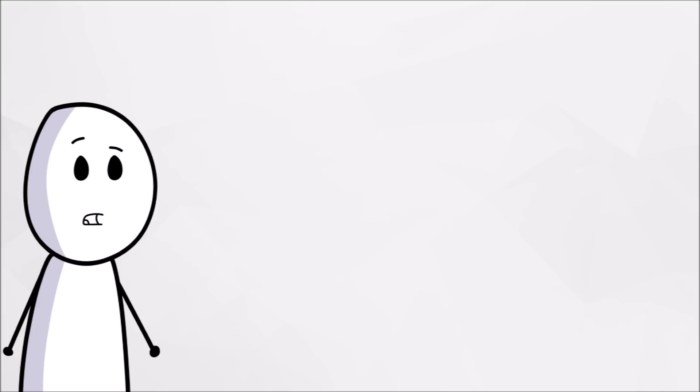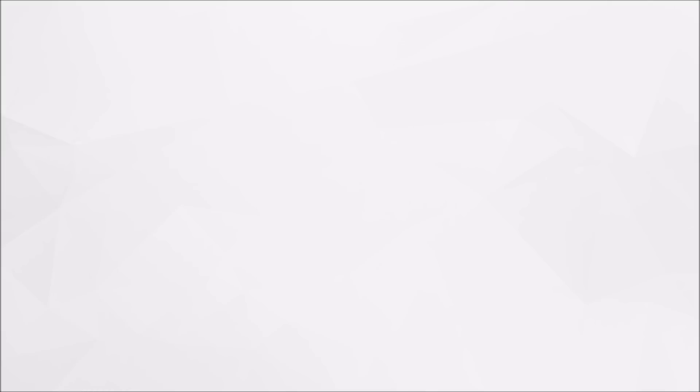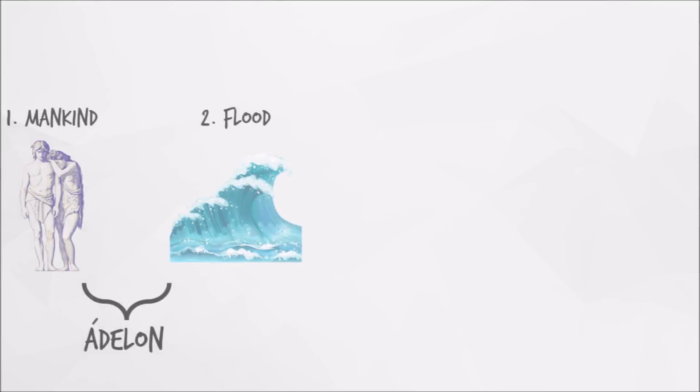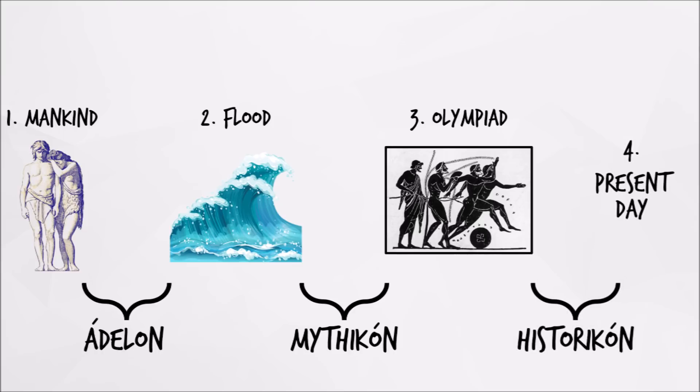However, most Greek and Roman scholars did divide history into three periods: Adalon, Mythicon, and Historicon. The Adalon period stretches from the creation of mankind to a large flood, the Mythicon period from the flood to the first Olympiad, and the Historicon period from the Olympiad to their own present time.